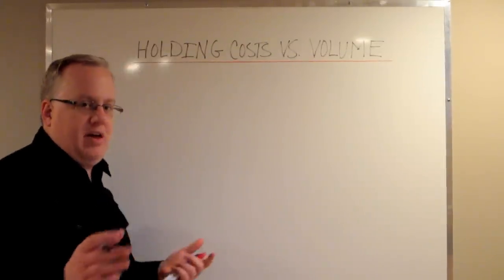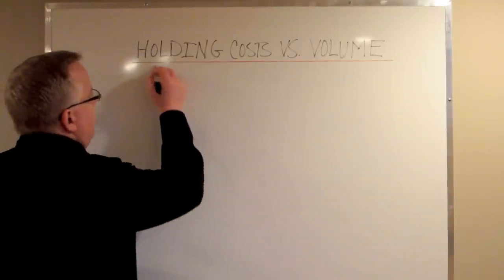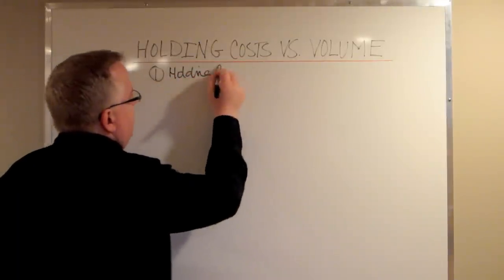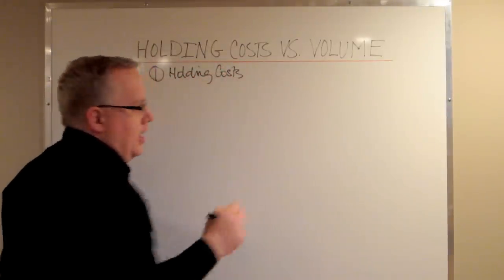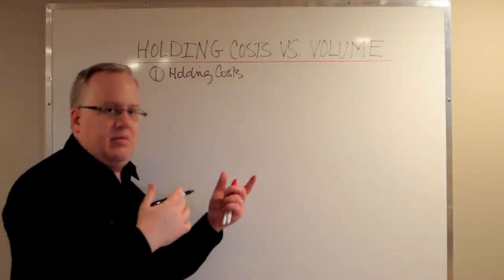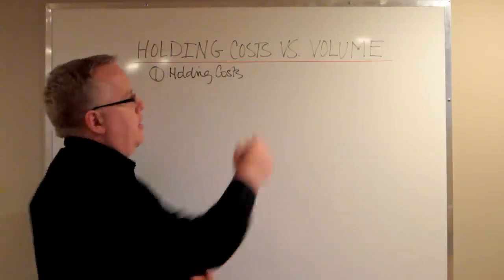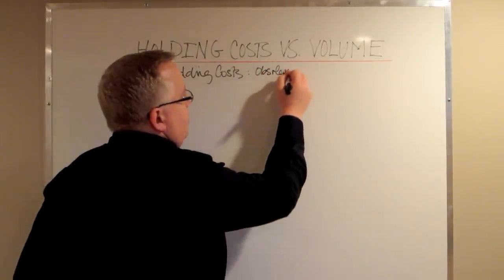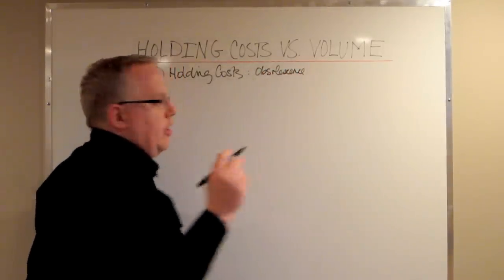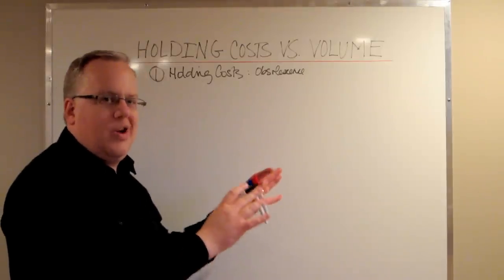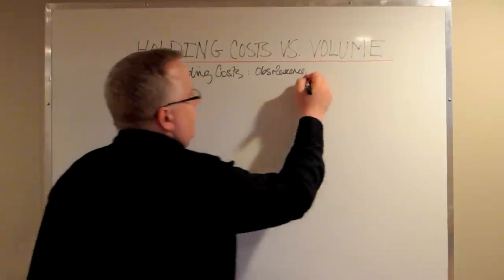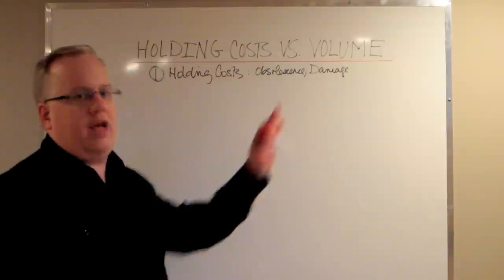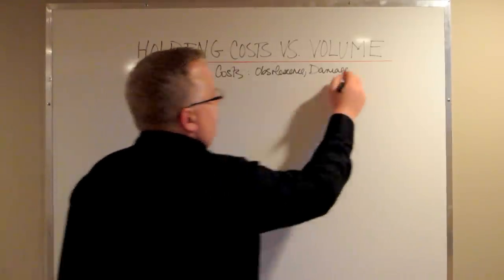We're going to start off by talking about holding costs. I've covered this a couple of other times in other videos. Holding costs are basically the cost to hold inventory without sales. When you hold inventory, it's more likely you're going to come across things like obsolescence. If you hold on to it too long, it's more than likely that your market is going to push that product offering away. Obsolescence is an issue. Damage is an issue. The longer you hold inventory, the more likely it is to become damaged.